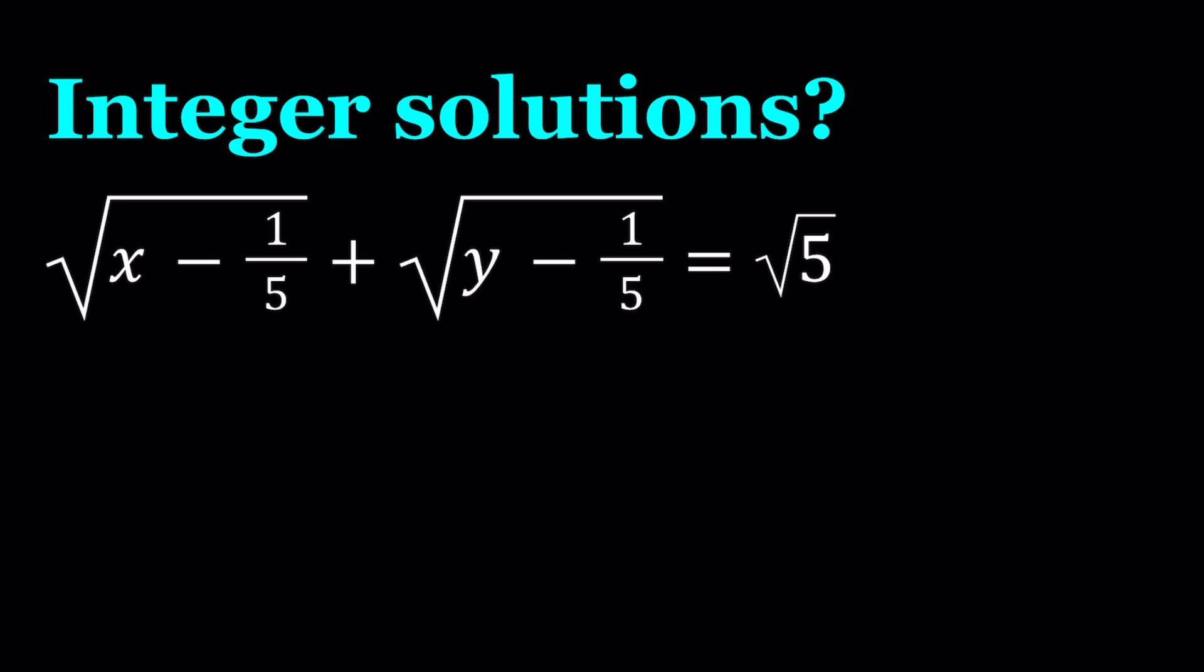Let's go ahead and make a common denominator inside the radicals first. So we get, if we write the x as 5x over 5, we get 5x minus 1 all over 5 inside the radical. And the second one is just going to be similar. And then this is equal to square root of 5.